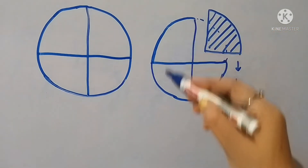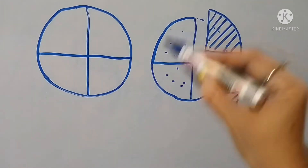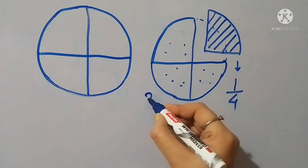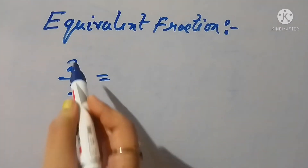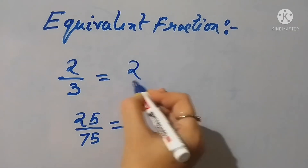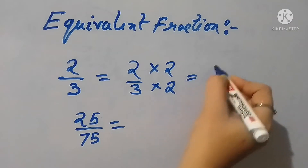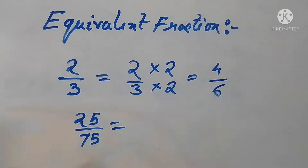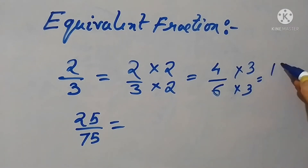I am shading the one-fourth part of the cake you have eaten. The rest of the part which is not eaten will be three-fourth of the cake. In a fraction, the upper number is called the numerator and the lower number is called the denominator. If we multiply a fraction by the same number on both top and bottom, the new fraction we get will be an equivalent fraction of the previous one. We can find unlimited equivalent fractions for any fraction following this process.